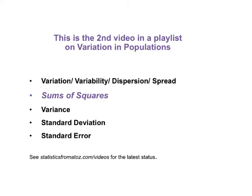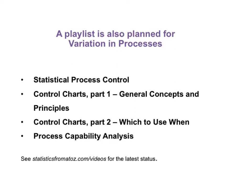This video is the second in a playlist on variation in populations. The playlist is also planned to include individual videos on variance, standard deviation and standard error. For variation in processes, a different playlist with four videos is planned: Statistical Process Control, Control Charts Parts 1 and 2, and Process Capability Analysis. See StatisticsFromAtoZ.com/videos for the latest status of my videos completed and planned.